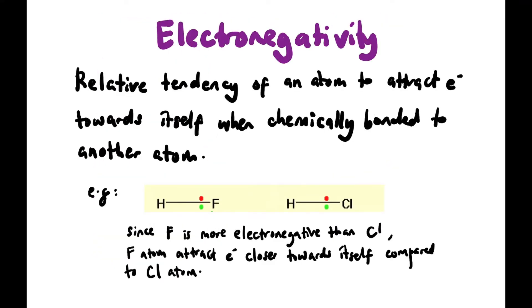Let's now look at electronegativity. It is the relative tendency of an atom to attract electrons towards itself when chemically bonded to another atom. For example, in H and F, F is more electronegative so it attracts electrons more towards itself. Similarly for H and Cl, Cl is more electronegative. You can see the electrons are not in the middle — they are closer to F and Cl. But comparing F with Cl, F is more electronegative because it attracts electrons even closer to itself compared to Cl.